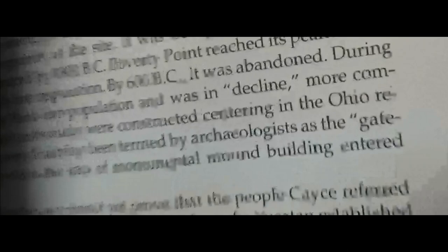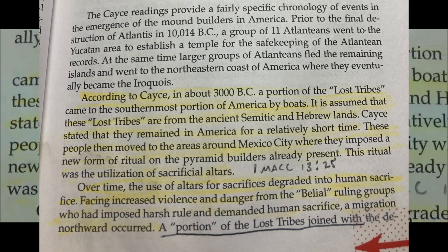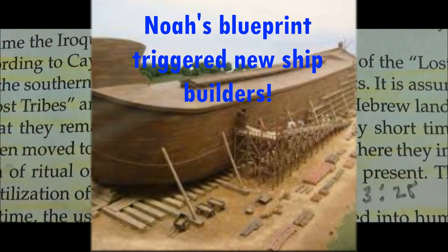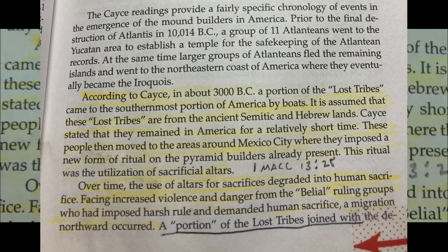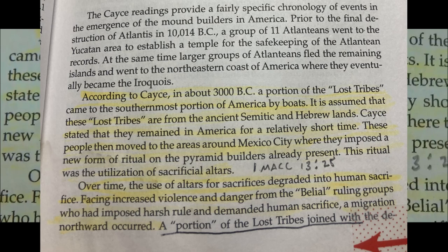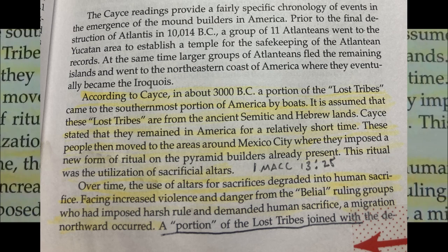This is Casey's chronology of mound builders and the archaeological record. According to Casey, in about 3000 BC a portion of the lost tribes came to the southernmost portion of America by boats. It is assumed that these lost tribes are from the ancient Semitic and Hebrew lands. They remained in America for a relatively short time, then moved to areas around Mexico City where they imposed a new form of ritual on the pyramid builders already present — the utilization of sacrificial altars. In First Maccabees chapter 13, verse 25, Judas Maccabees built seven pyramids for his father and his brethren.